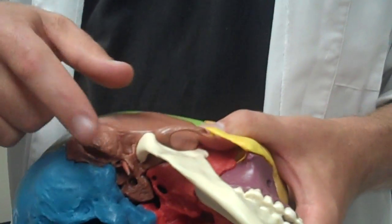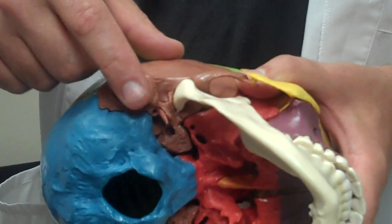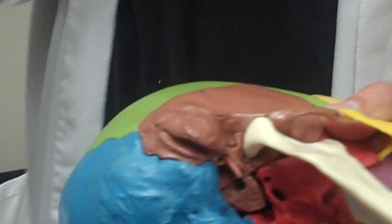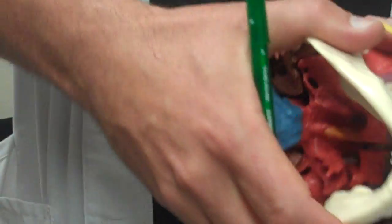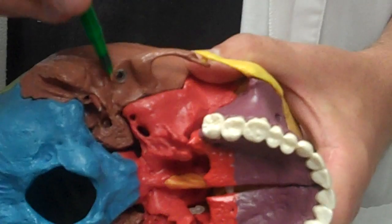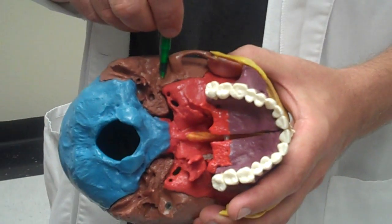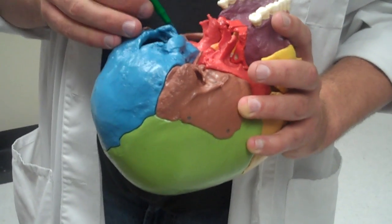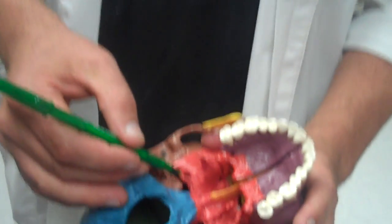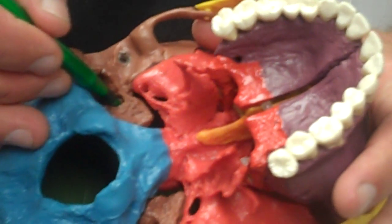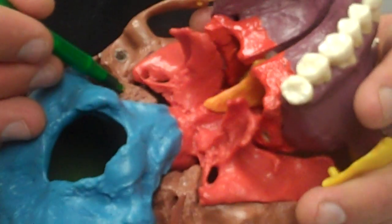We have the mastoid process. Then, grab me a pen to point. We have the mandibular fossa. That's the hole where the mandible goes in. Then we have carotid canal, jugular canal, jugular foramen.